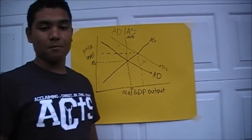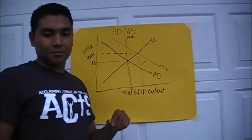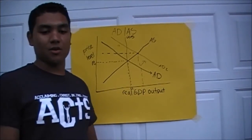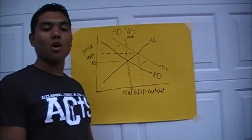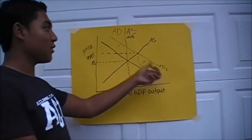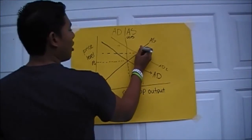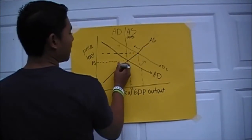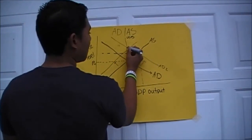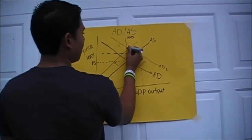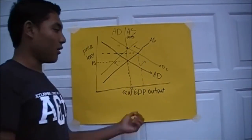Now let's back up. Seeing as how price level increased, inflation increased. So in the long run, prices of resources will increase, which will cause AS to decrease or shift to the left. So AS is going to move to the left.